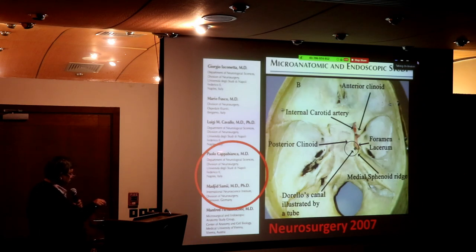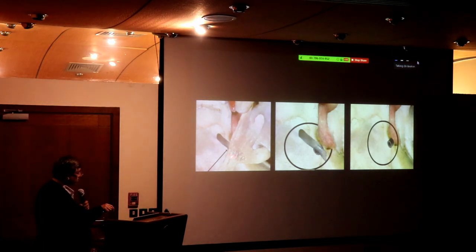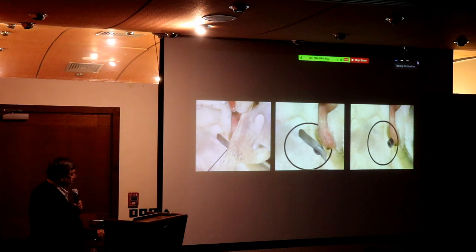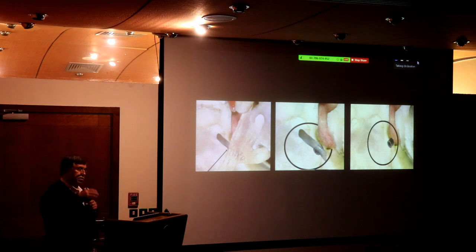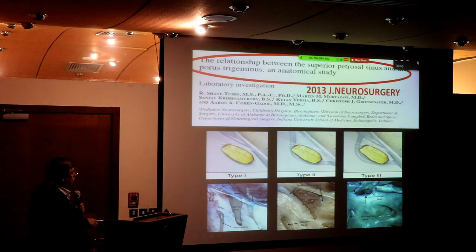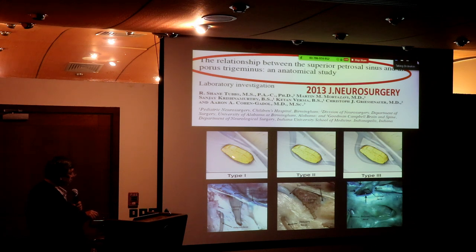Another beautiful paper by Kawase and Majid Samii describes that particular area. You see the trigeminal nerve; underneath it is the carotid. This is the Gruber ligament. If you remove the trigeminal, you will find the carotid canal and the Gruber ligament. If you remove the Gruber ligament, you will see the neural canal through which the sixth nerve passes. It is no longer acceptable that patients come out with cranial nerve deficits.